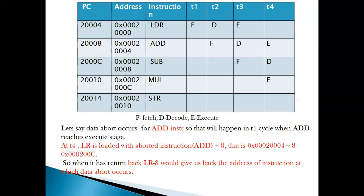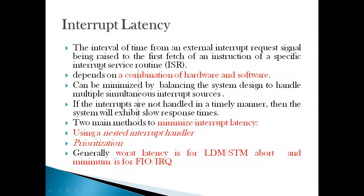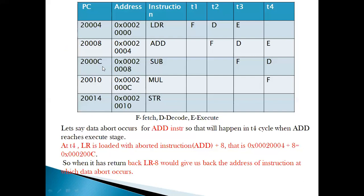During T4 when the data abort occurs on the add instruction at 0x20004, the program counter is already pointing to 0x2000C. So we store the aborted instruction address plus 8 in LR: 0x20004 + 8 = 0x2000C. This is because plus 8 corresponds to the instruction being fetched during T4, which is 8 addresses ahead of the instruction at which the abort occurred.